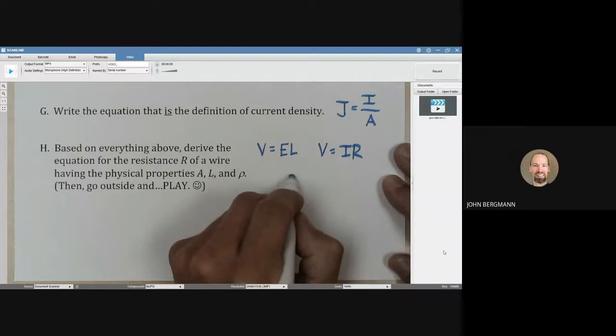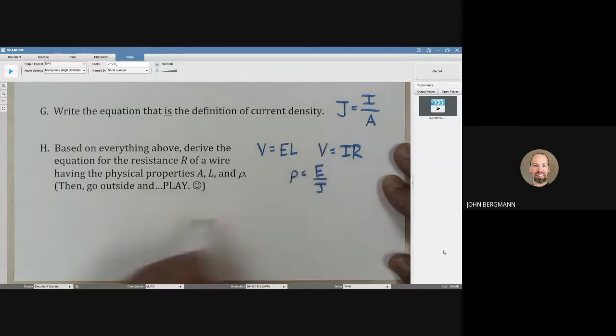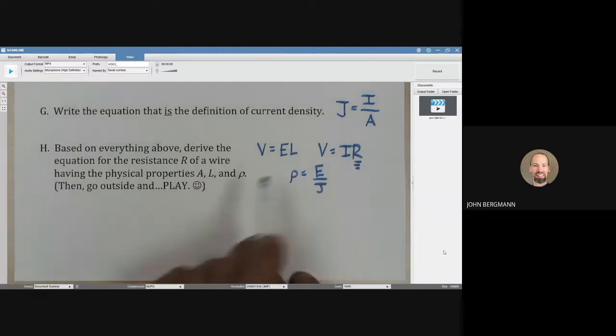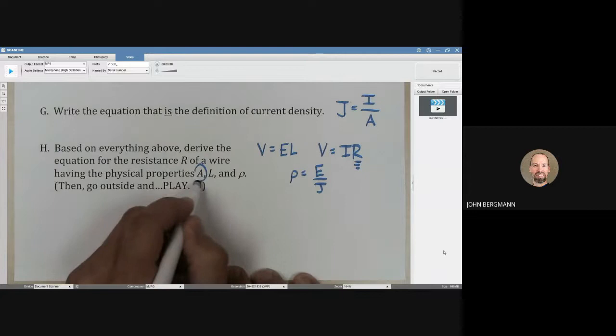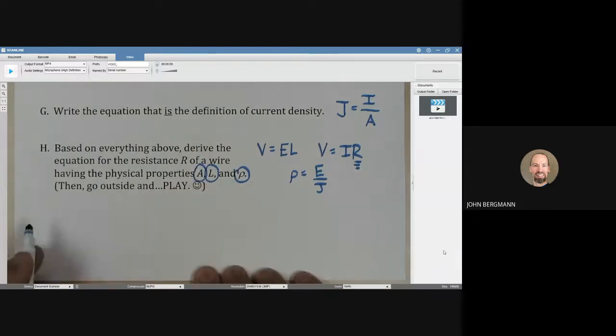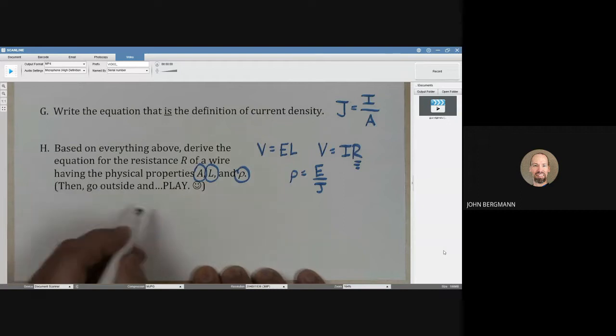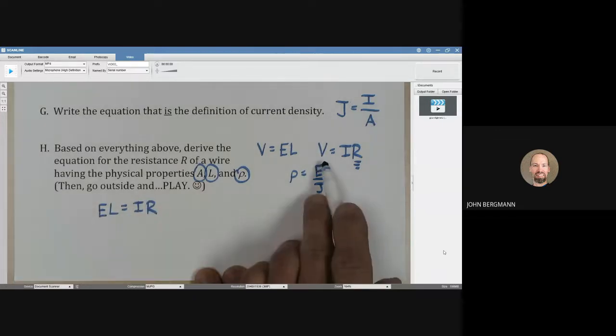And the other thing we had was rho is equal to E divided by J. Based on those four things, we need to write an equation for resistance R. V needs to disappear because what we can have is we can have A in the equation and L and rho. So, V needs to disappear. I think what we can do here is we can say E times L is equal to I times R. E times L, that looks right to me.